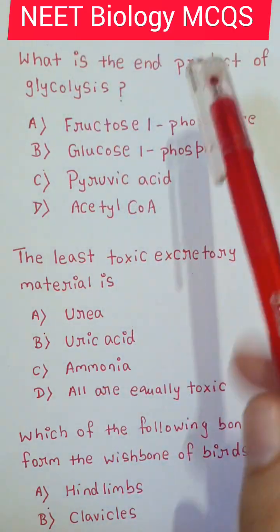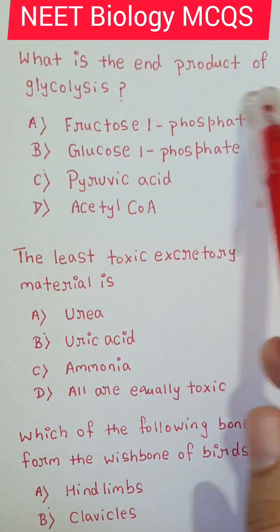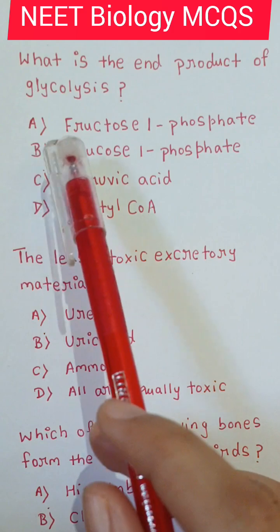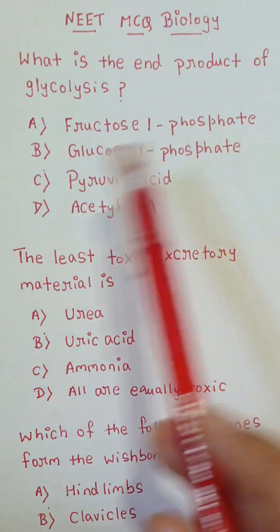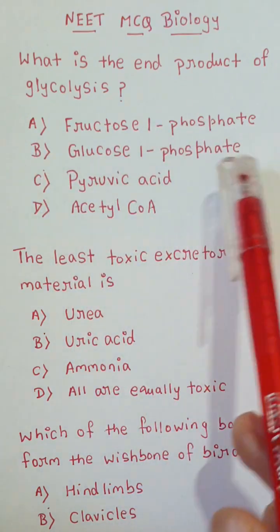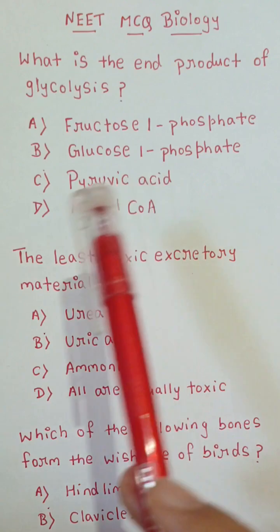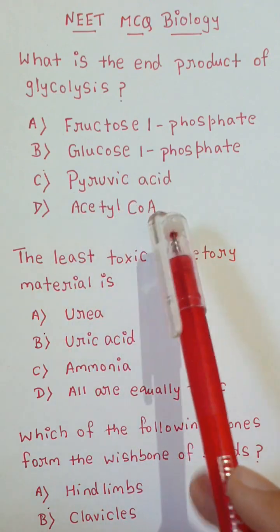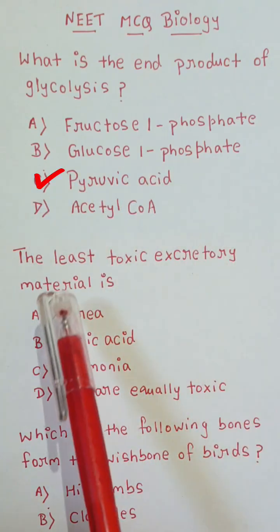Biology MCQ. What is the end product of glycolysis? A) Fructose 1-phosphate, B) Glucose 1-phosphate, C) Pyruvic acid, or D) Acetyl CoA. The correct option is C: Pyruvic acid.